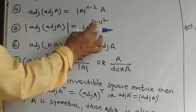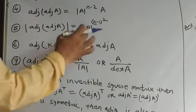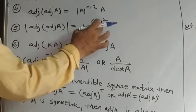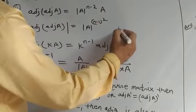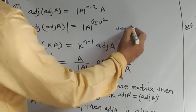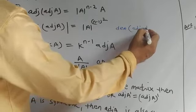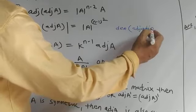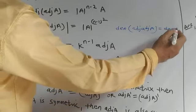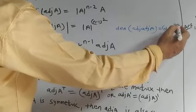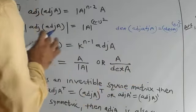Fifth property: the determinant of Adjoint of Adjoint A is equal to determinant A raised to the power n minus 1, whole squared.